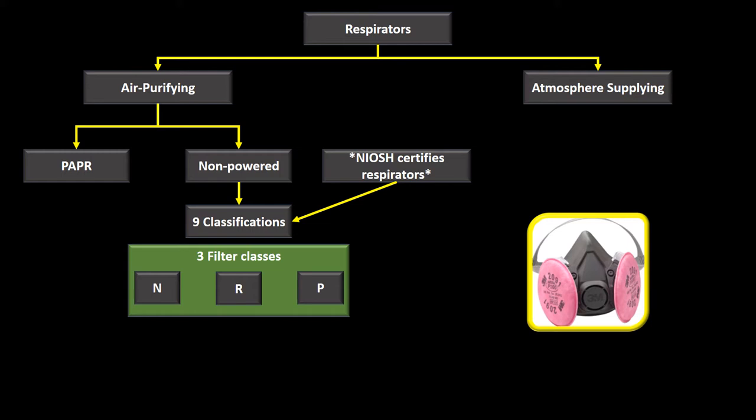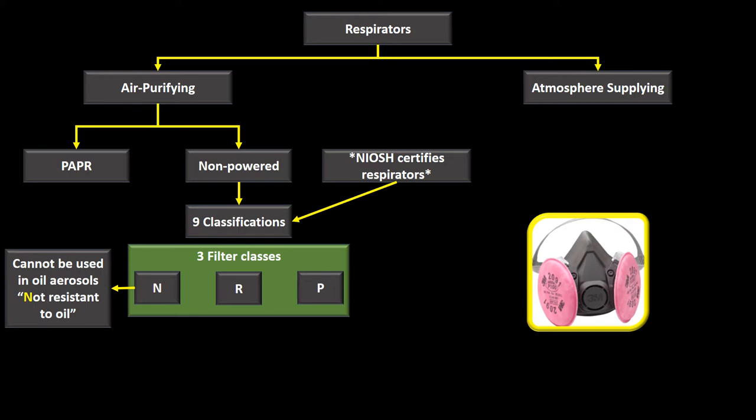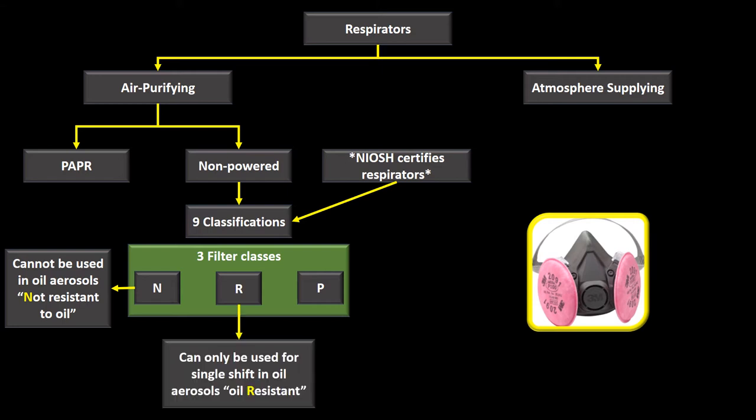An N-class filter cannot be used if oil aerosols are present — it is not resistant to oil. The R-class can be used in the presence of oil aerosols but only for a single shift, making it oil resistant. The P-class can be used in the presence of oil aerosols multiple times, so it is considered oil proof.